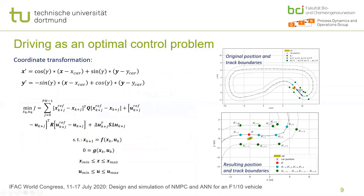We present here the coordinate transformation given by two equations and a general form for the optimal control problem — the NLP that we are solving at each iteration. It's important to understand how we implement the cost function for this problem and the constraints, specifically the track constraints: the left and right track boundaries.